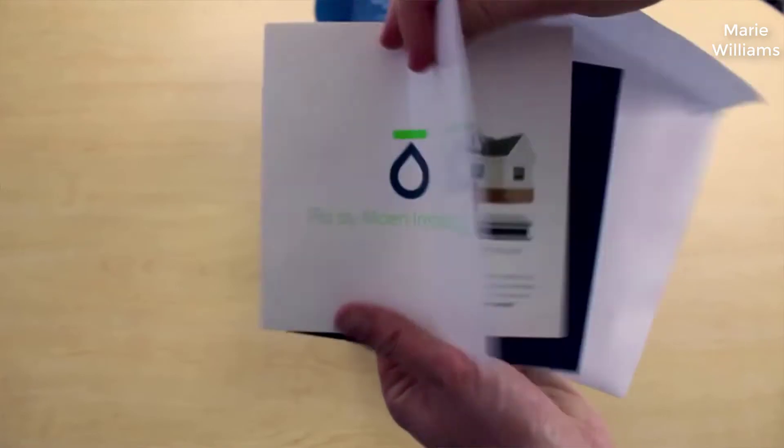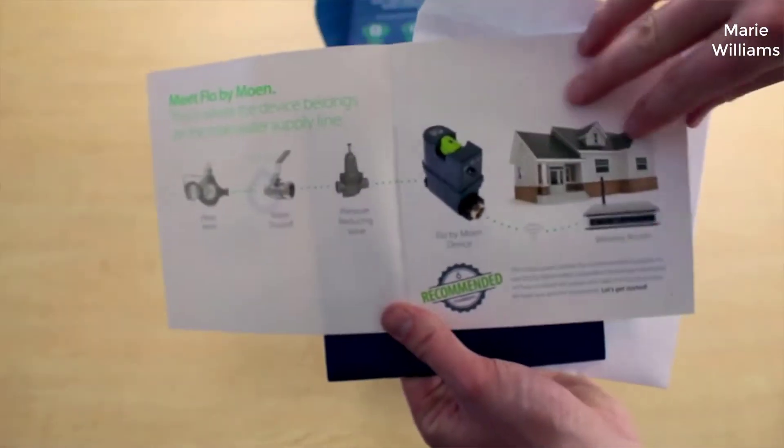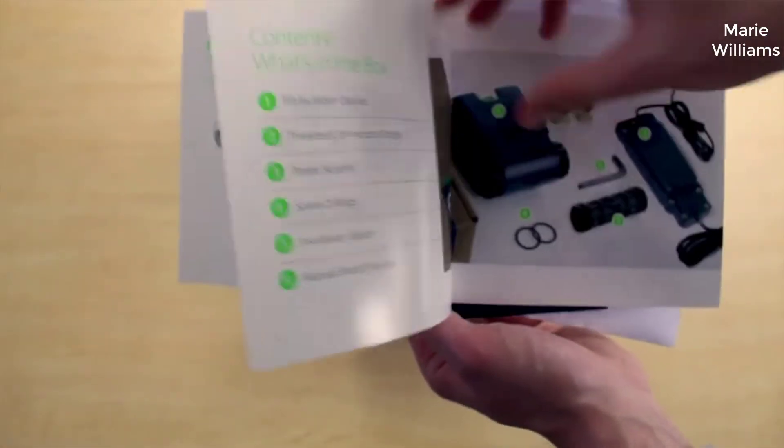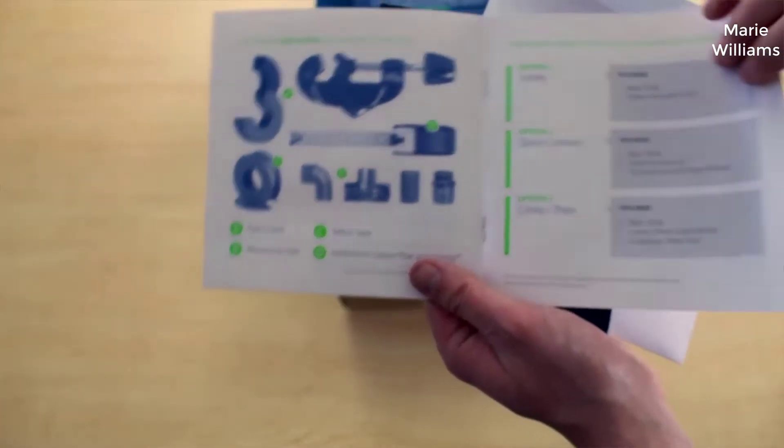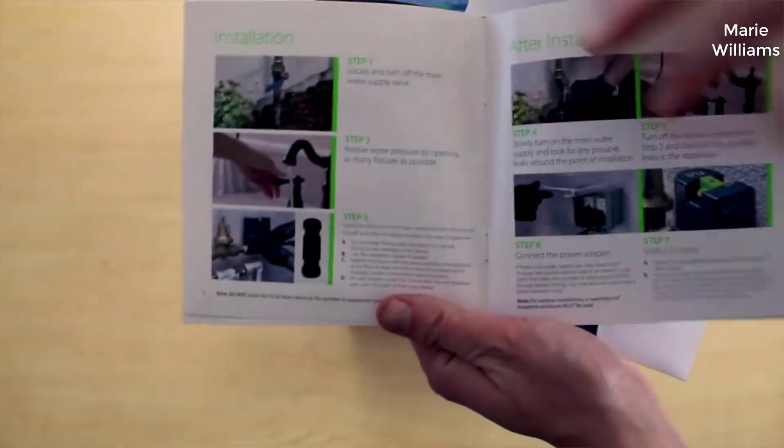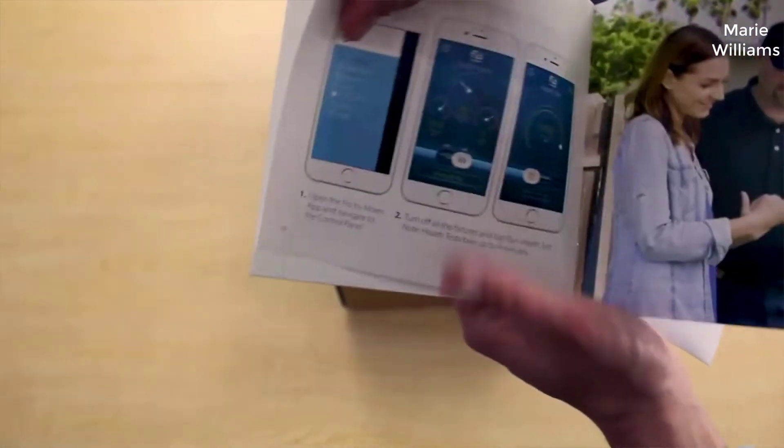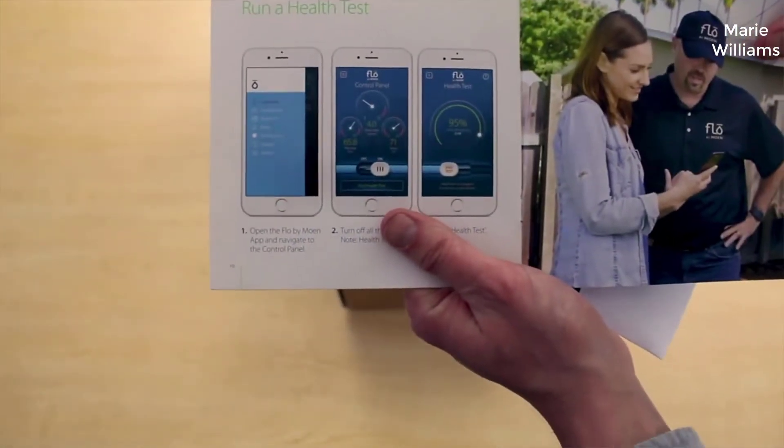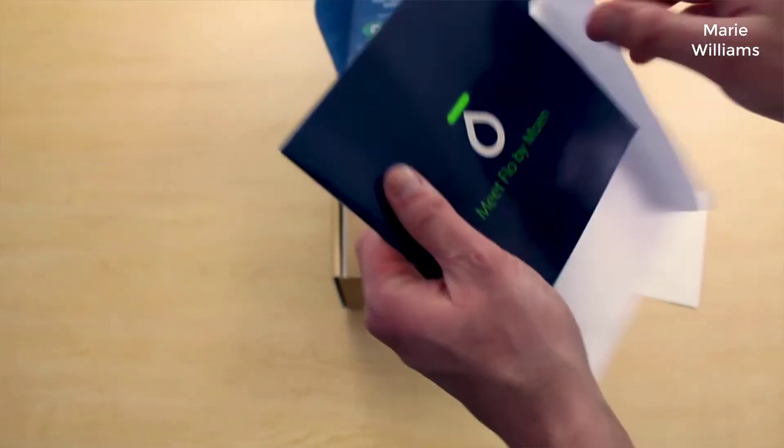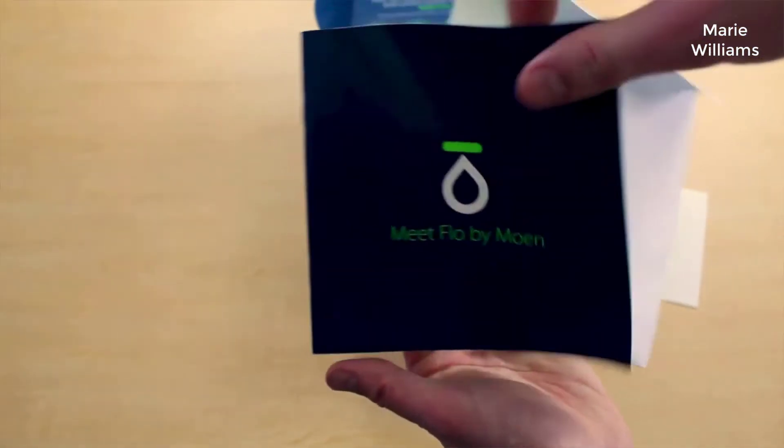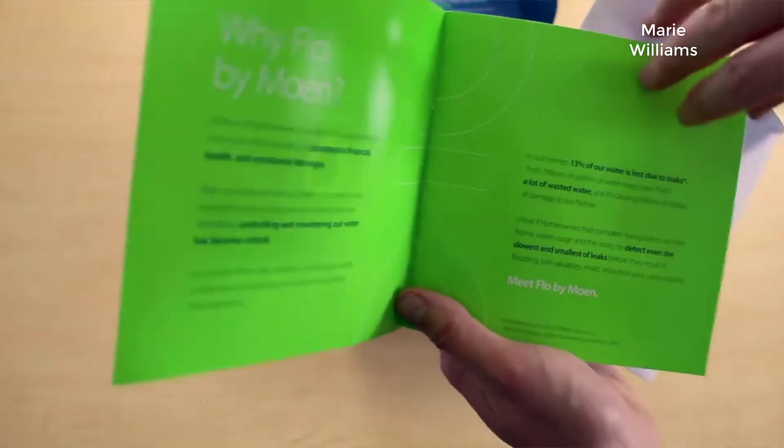So what is this whole thing and why is it a nice thing to have or why do you need it? Well, basically what it does is it detects any leaks in your house. And when I'm talking about any leaks, I'm talking about it can detect as little as one drop per minute anywhere in your entire home. So it's very accurate for detecting leaks. It'll detect even the smallest thing.